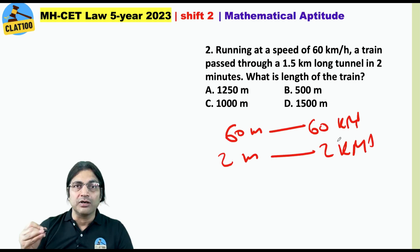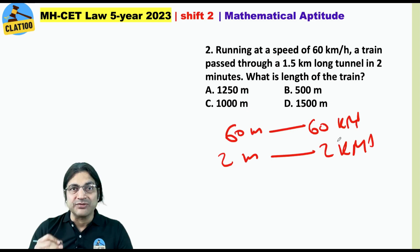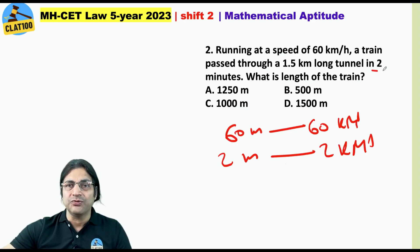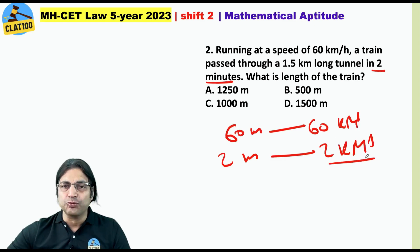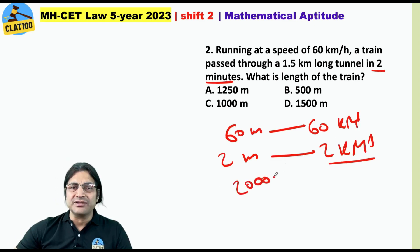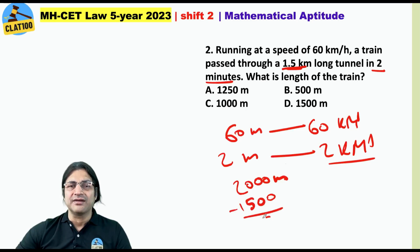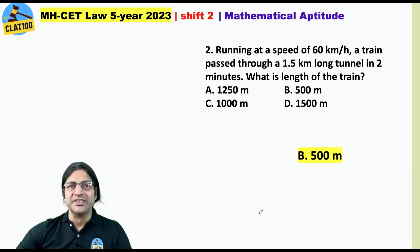But in order to cross a tunnel, a train has to go through the length of the tunnel as well as its own length. So it passes through the tunnel in two minutes, and in two minutes it travels two kilometers, that is two thousand meters. Out of those two thousand meters, the length of the tunnel is one and a half kilometers, that is 1500 meters. So the length of the train is the remaining 500 meters. Your answer is 500 meters.